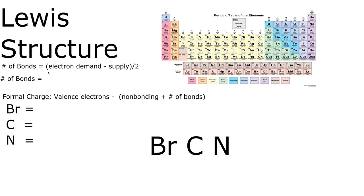Today we will construct the Lewis structure for cyanogen bromide. First, let's figure out how many valence electrons we have total in this molecule.